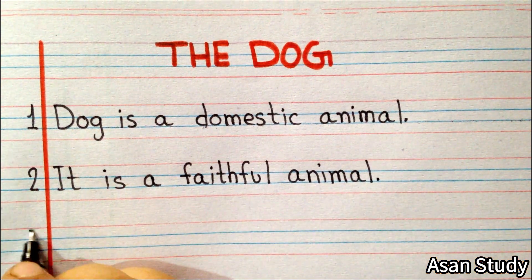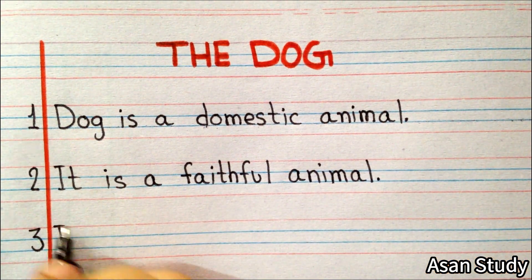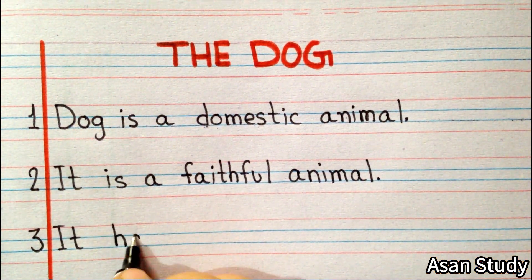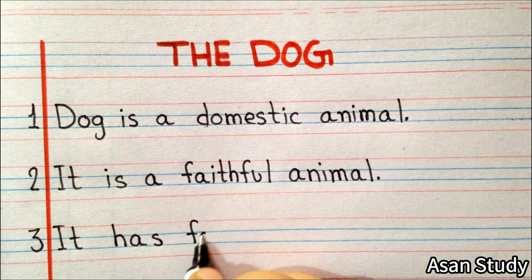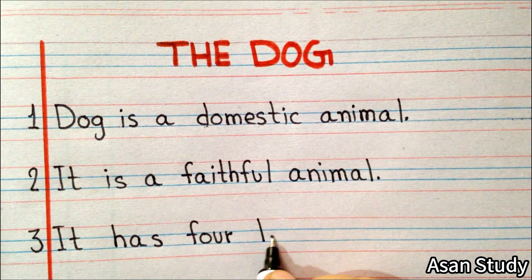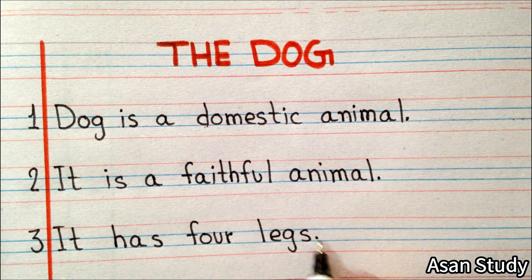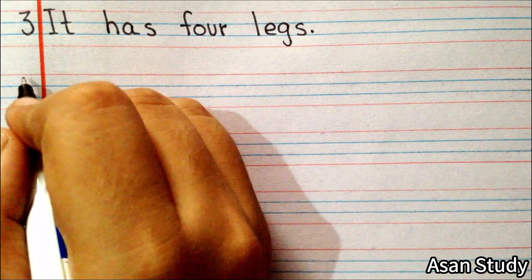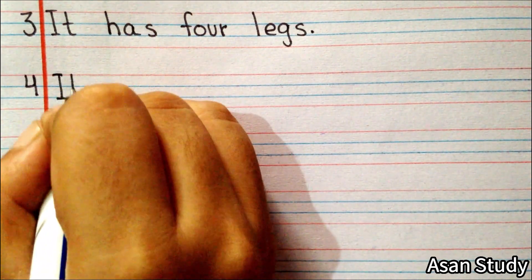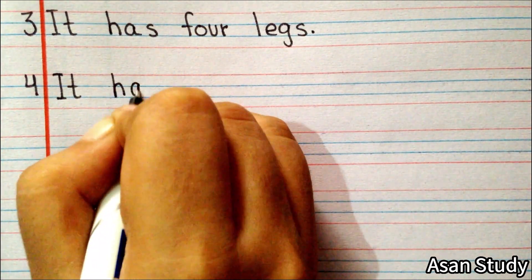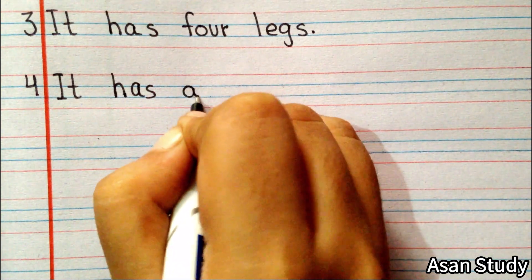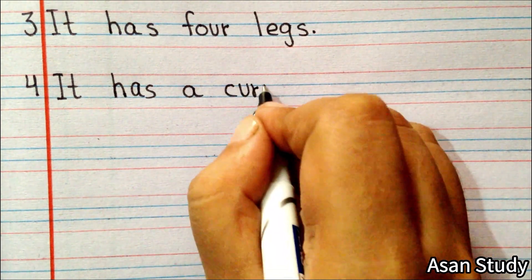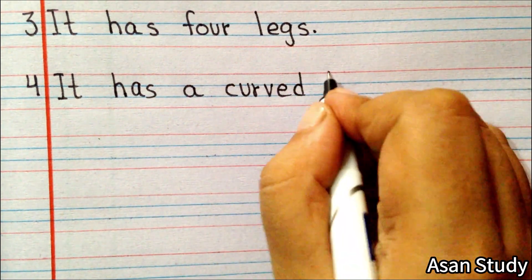Point number 3: It has four legs. Point number 4: It has a curved tail.